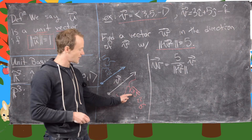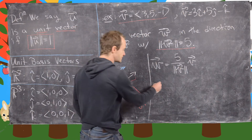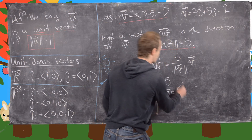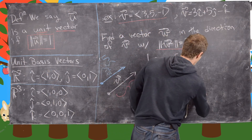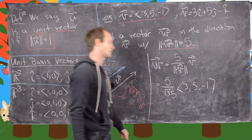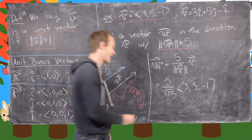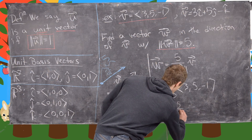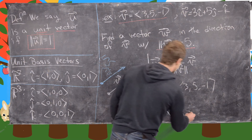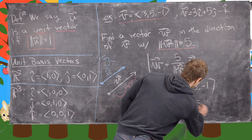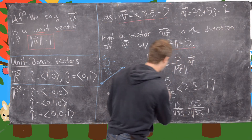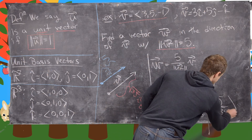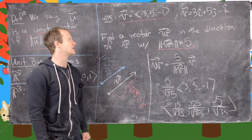Recalling that the length of v was √35, we write w = (5/√35) times v, where v = (3, 5, -1). Multiplying through gives the vector (15/√35, 25/√35, -5/√35). That's the end of this example.